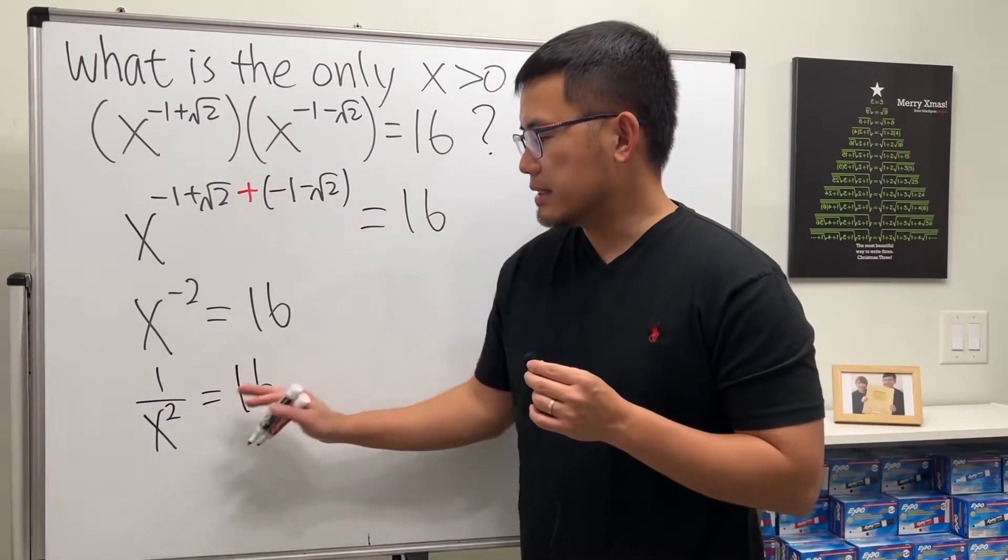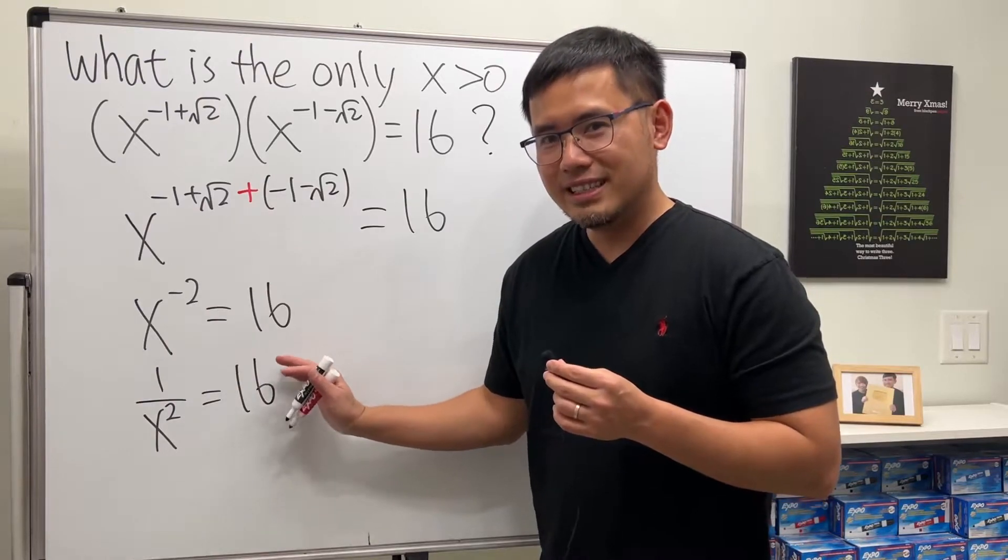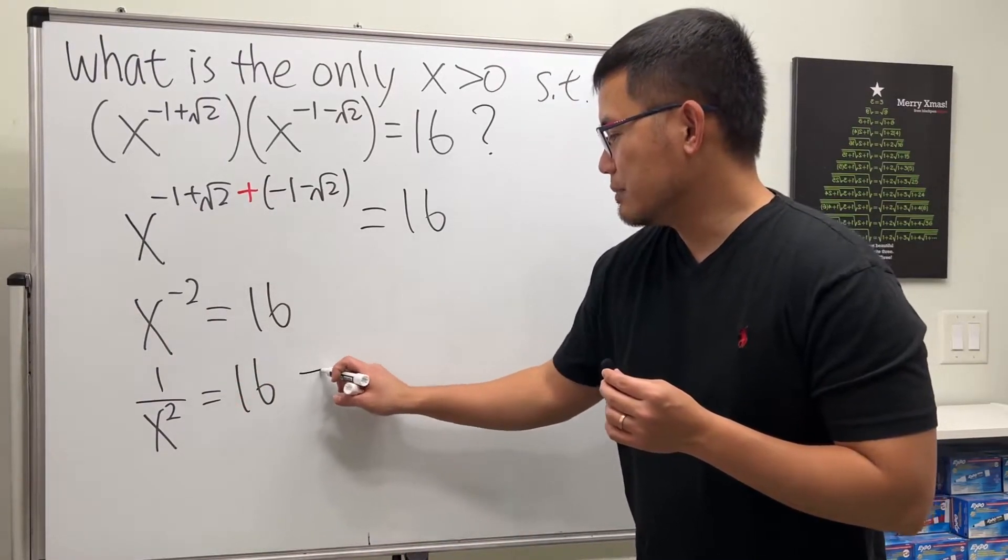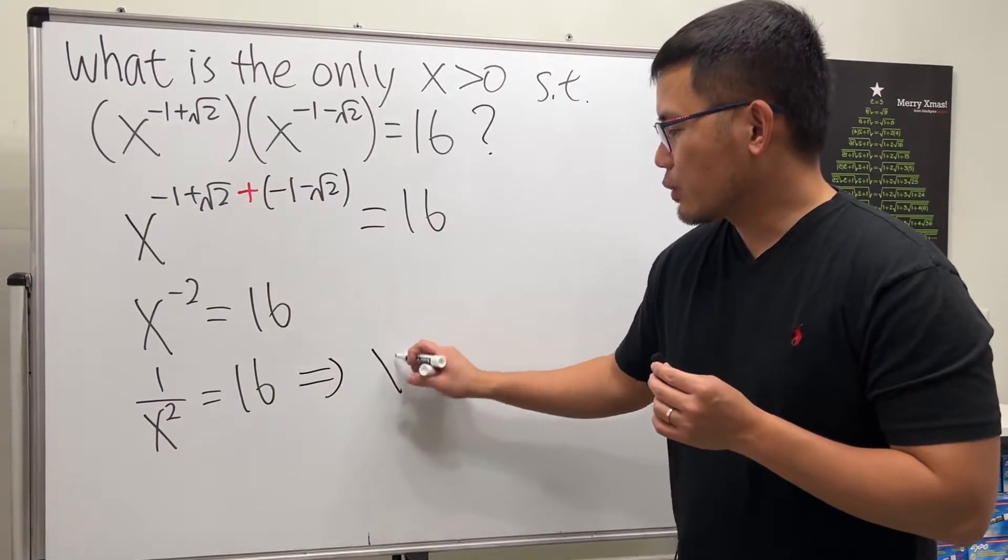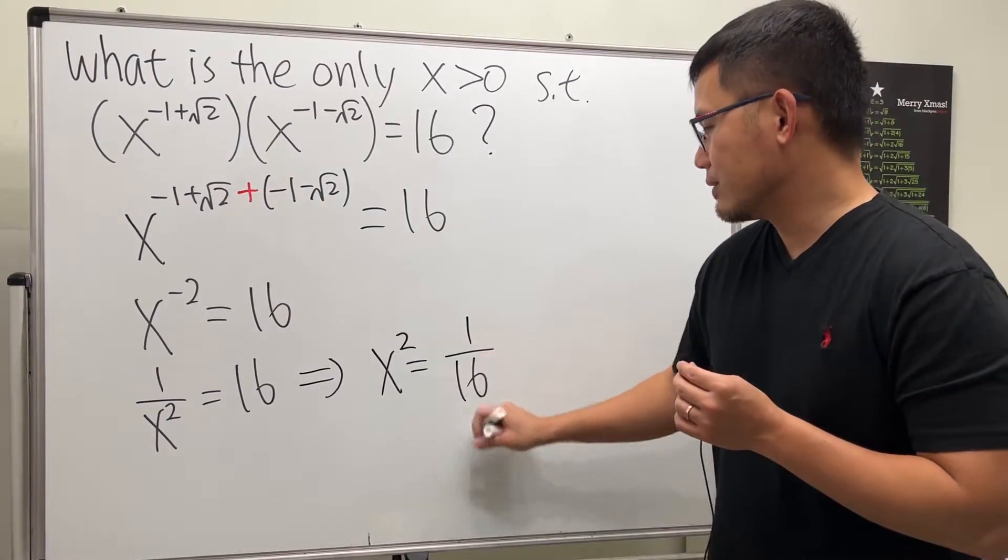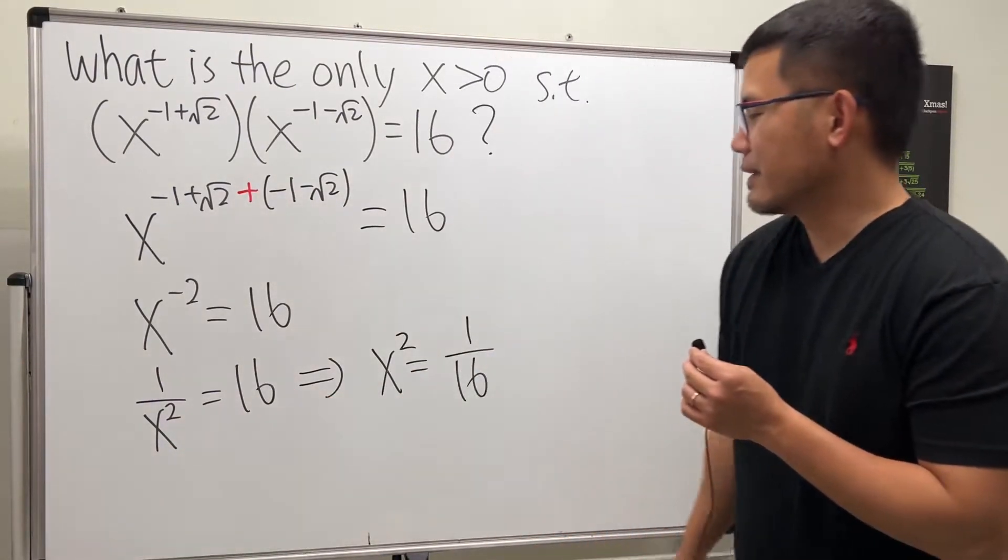You can multiply x squared on both sides and divide 16 on both sides, so this means x squared is equal to 1 over 16.